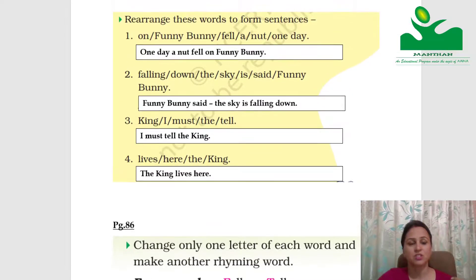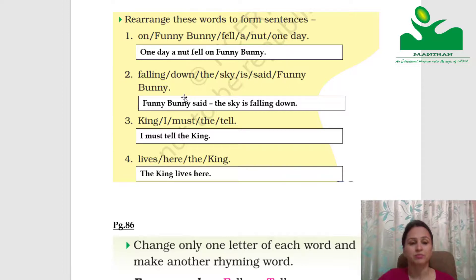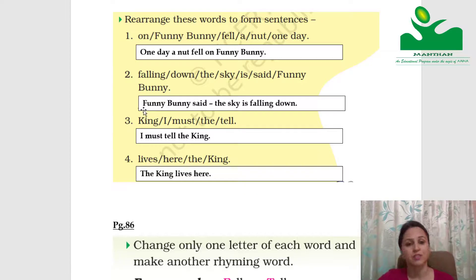Rearrange these words to form sentences. The words are given in jumbled form; make a sentence from them. Answers: One day a nut fell on Funny Bunny. Funny Bunny said, the sky is falling down. I must tell the king. The king lives here.